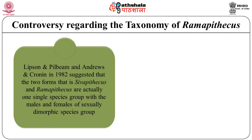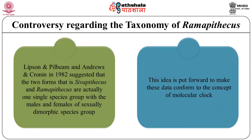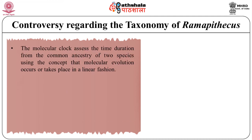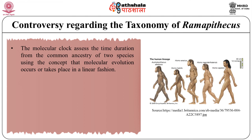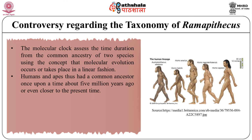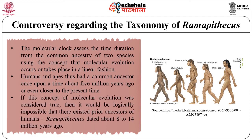This view was extended when in 1977 Lipson and Pilbeam, and Andrews and Cronin in 1982, suggested that the two forms — Sivapithecus and Ramapithecus — are actually one single species group, with males and females of a sexually dimorphic species. This idea was put forward to make the data conform to the concept of the molecular clock. The molecular clock assesses the time duration from the common ancestry of two species, using the concept that molecular evolution occurs in a linear fashion, suggesting that humans and apes had a common ancestor about five million years ago or even closer to the present. If this concept were considered true, then it would be logically impossible that there existed prior human ancestors — Ramapithecus — dated about 8 to 14 million years ago.